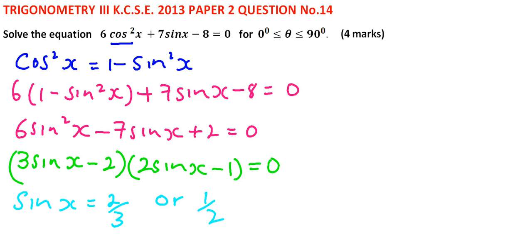With that, we are now able to get the angles whose sine is 2 thirds, and these angles are - angle 30 degrees corresponds to sine equals a half. So we have x equals 30 degrees or 41.81 degrees.